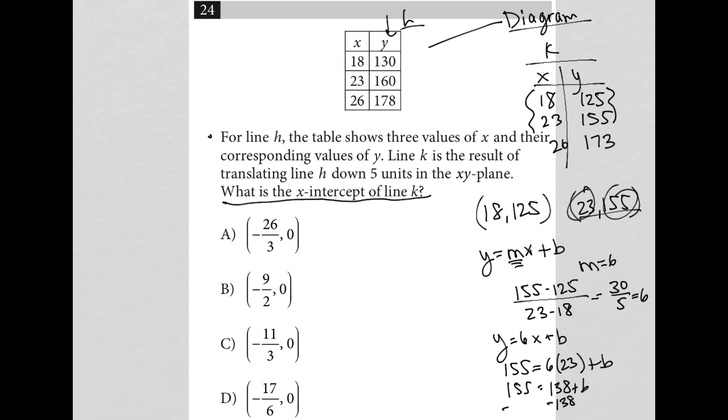I'm subtracting 138 from both sides. And by doing that, I get 17, so I have 17 equals B, which means my equation is Y equals 6X plus 17.